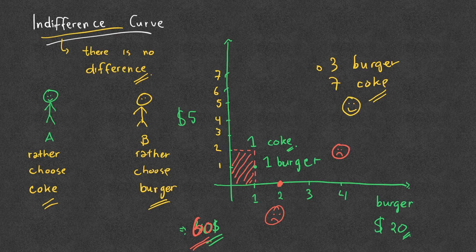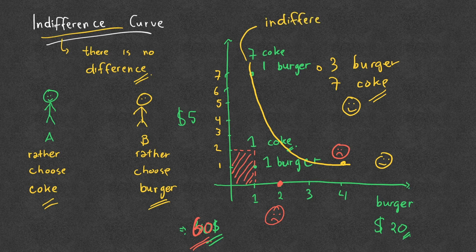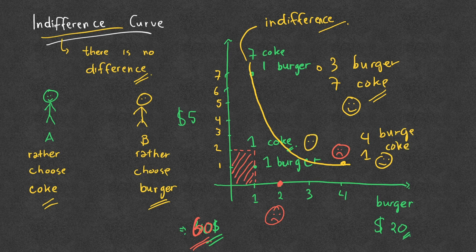Now you're more happy. Let's say you don't have a budget constraint and you're just thinking about what makes you happy — this is where the concept of indifference curve comes in. For example, you're happy with seven Cokes and one burger. We draw a line, and this line shows all the combinations that make you happy. We call it indifference because for you there is no difference between consuming seven Cokes with one burger versus four burgers with one Coke.